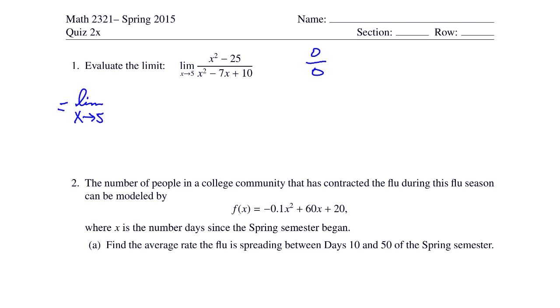So the limit as x goes to 5, x squared minus 25 factors as x minus 5 times x plus 5, and x squared minus 7x plus 10 factors as x minus 5 and x minus 2.